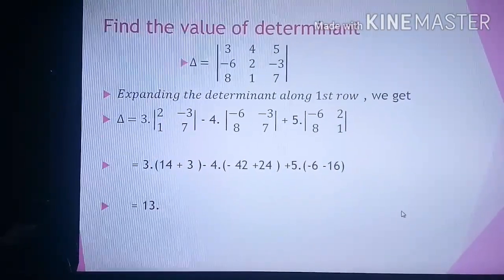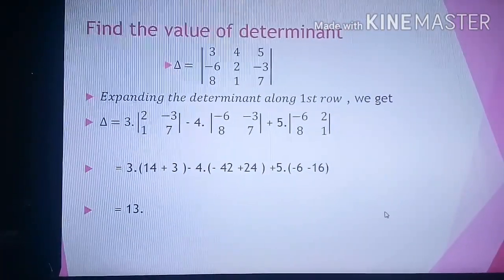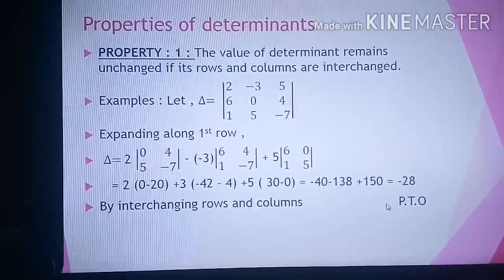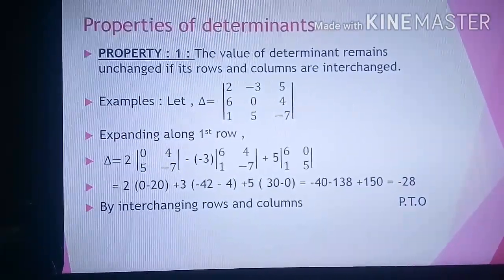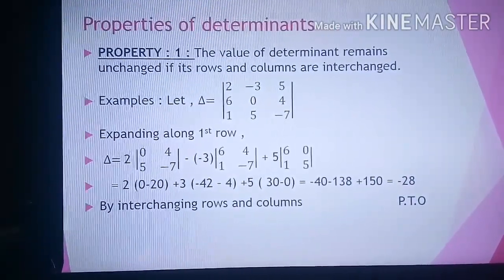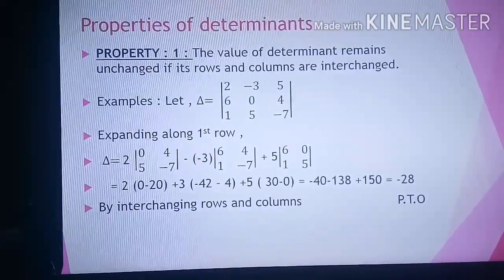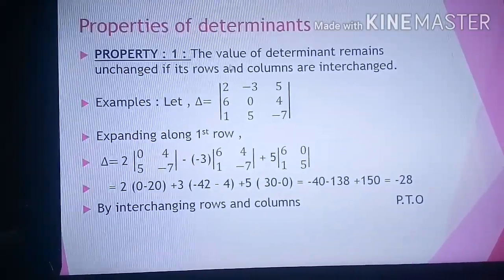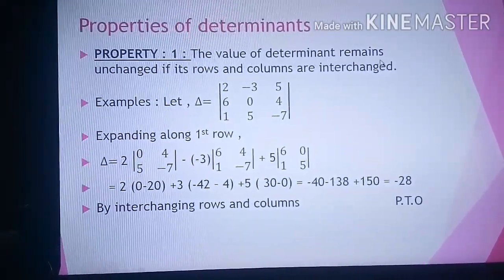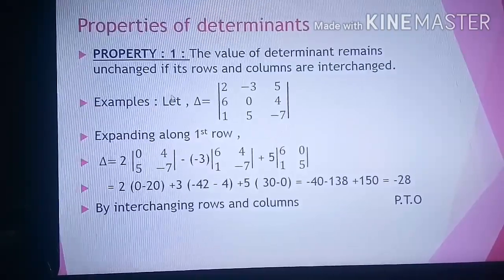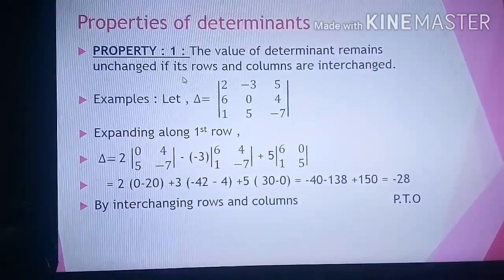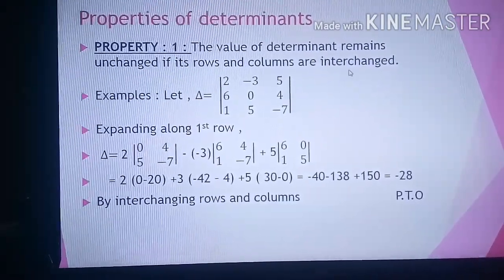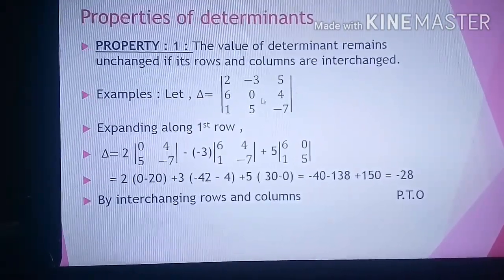This is the process to find out the value of the determinant. Now the next part is properties of determinants. Property 1: the value of the determinant remains unchanged if its rows and columns are interchanged.